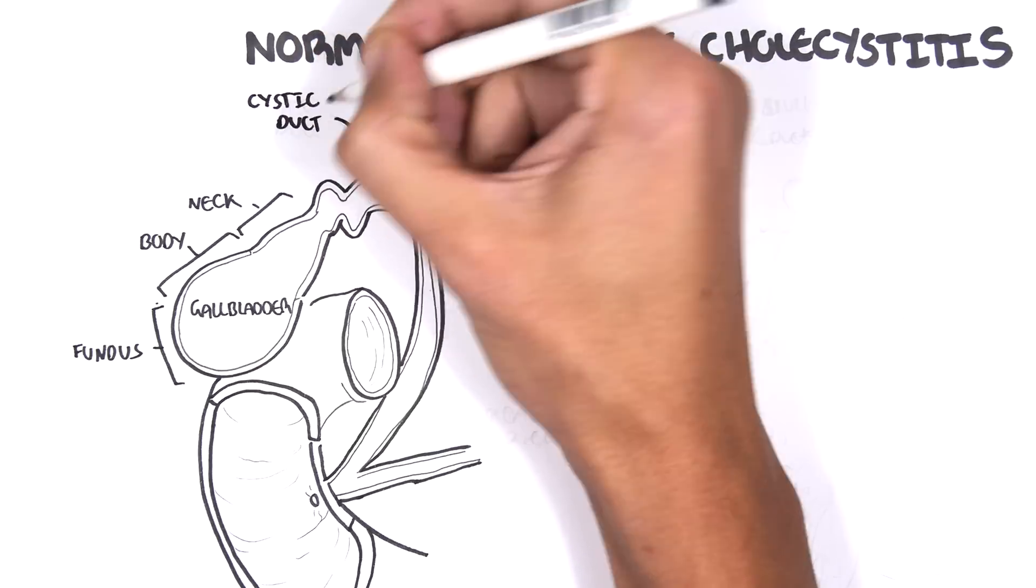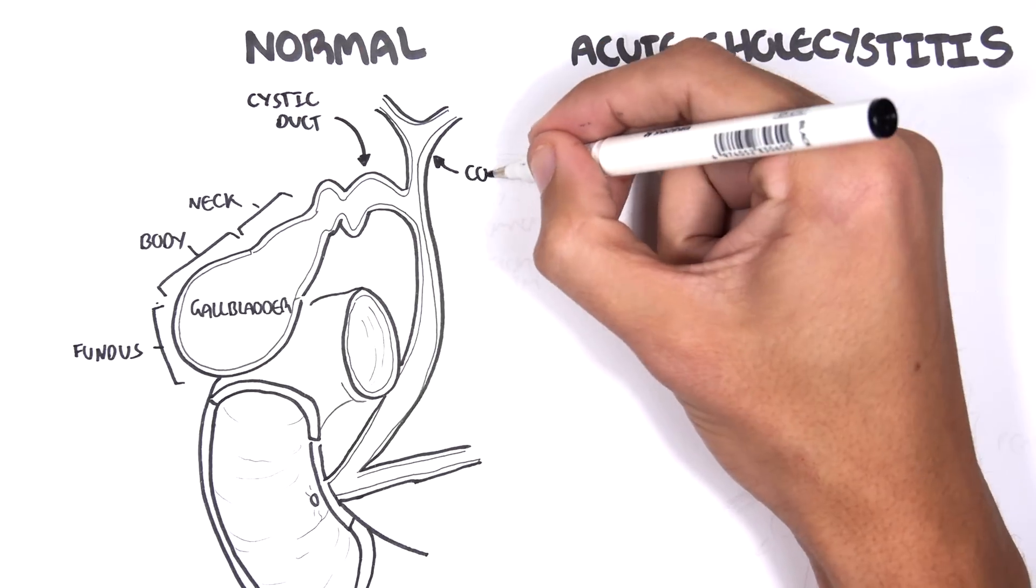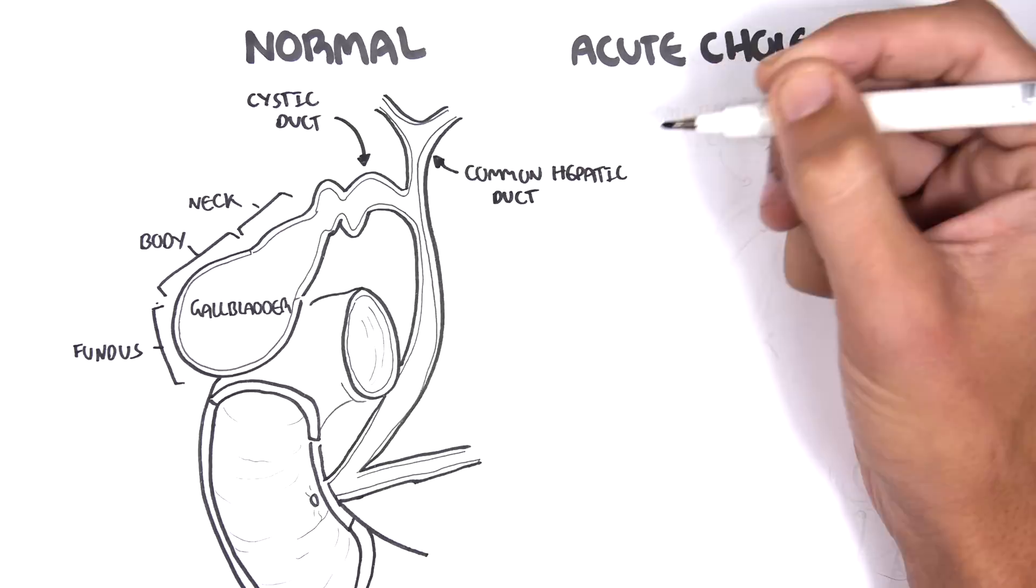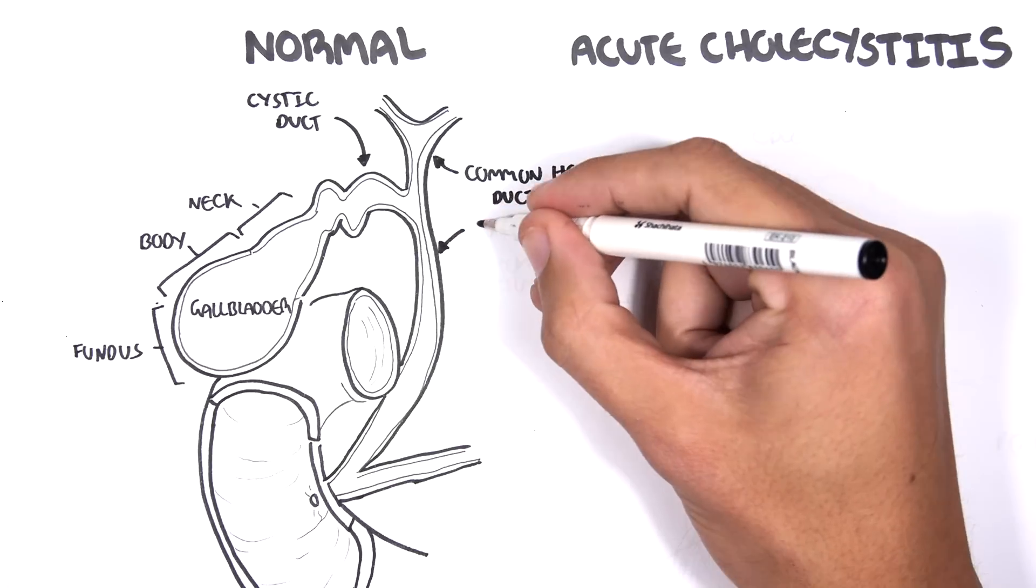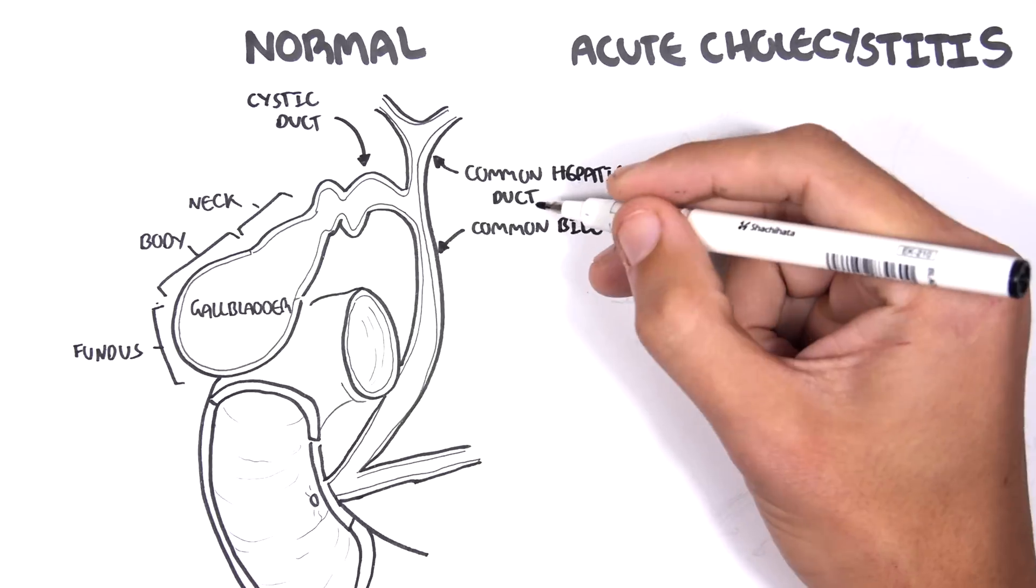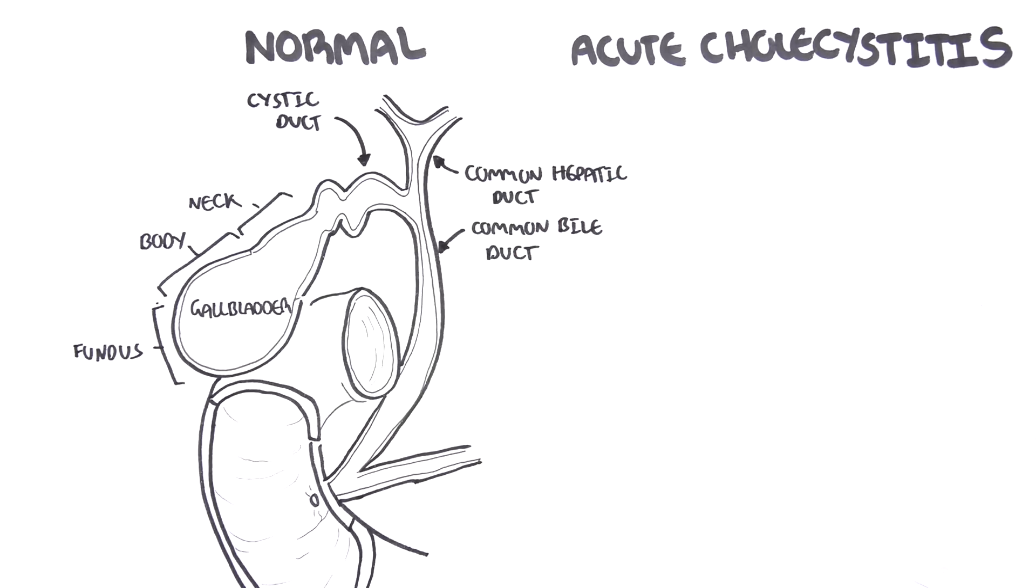This is the cystic duct coming out from the gallbladder and connects to the common hepatic ducts, which arise from the liver. The joining of the cystic duct and common hepatic ducts forms the common bile duct, which runs all the way down and joins with the pancreatic duct from the pancreas.